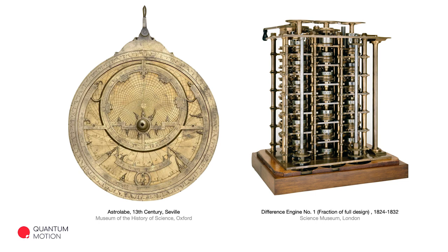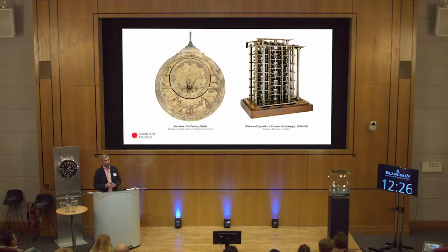A few thousand years later, Charles Babbage came up with a different type of application-specific computer based on gears — the difference engine. Its application was to tabulate values of logarithmic and trigonometric functions, and its design involved 25,000 moving parts and would have weighed four tons. Only a small fraction of it was built. Babbage also designed a universal general-purpose computer called the analytical engine, but that device was so complex it never got off the drawing board. This illustrates the fundamental problem with encoding information using mechanical gears — it was fine for small-scale calculators but no way to build a large computer.